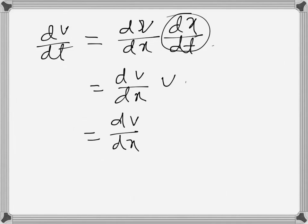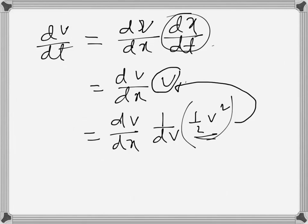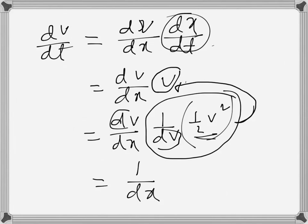Now v can be written in terms of differentiation as ½v². Basically, if ½v² is differentiated with respect to v, we get v. The benefit is that dv and dv cancel, so we get this simplified form.